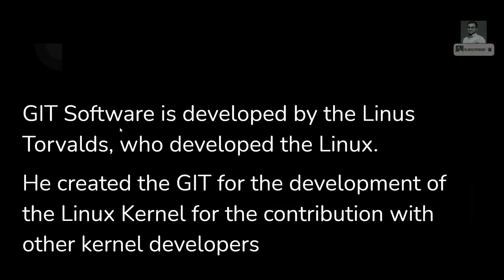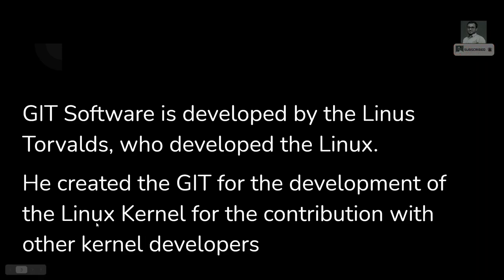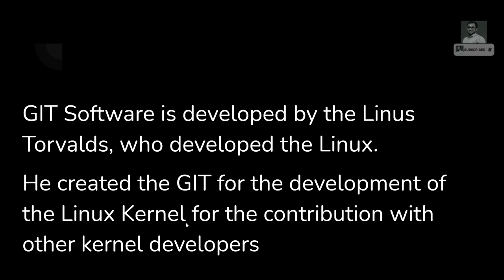Now, who developed this Git software? The Git software was developed by Linus Torvalds — the same person who developed Linux. He created Git for the development of the Linux kernel. The Linux kernel is a set of code maintained by multiple developers, not only Linus Torvalds. So many developers write code for the Linux kernel, and for managing those contributions, he developed Git.